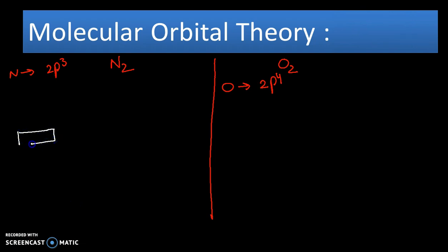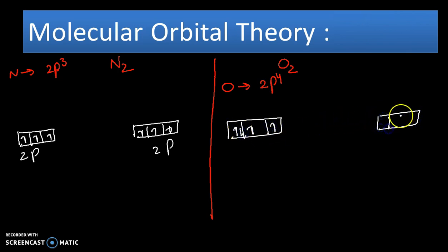There is one nitrogen atom with three electrons, another nitrogen atom again with three electrons in 2p orbitals. In case of oxygen, there are 2p orbitals but this time with four electrons, and another oxygen atom with four electrons.